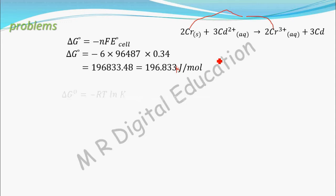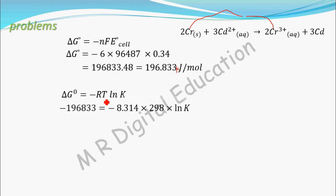Now we have to calculate K, the equilibrium constant. You know the relation: delta G naught = −RT ln K. You know delta G naught, R = 8.314 J/(mol·K), and temperature is not mentioned so we take standard temperature of 298 K. Use the value in joules per mole — do not use kilojoules — so: −196,833 = −8.314 × 298 × ln K.